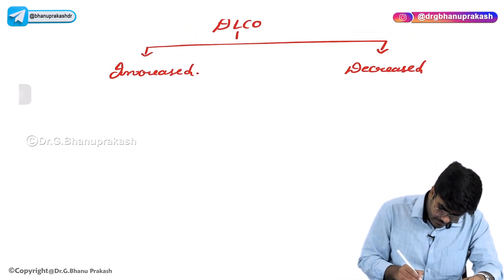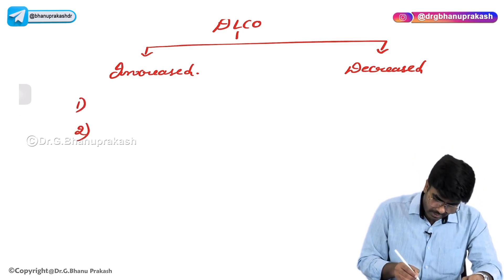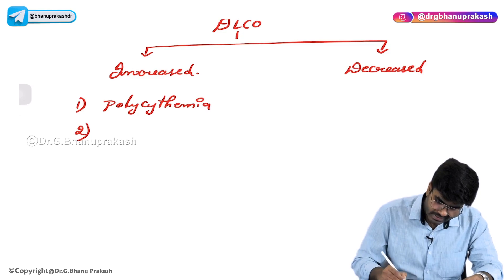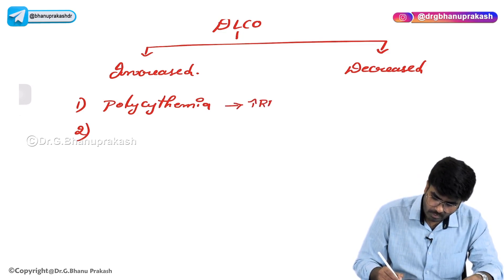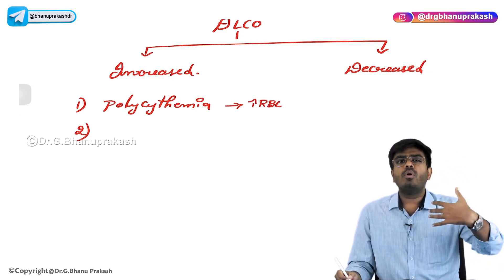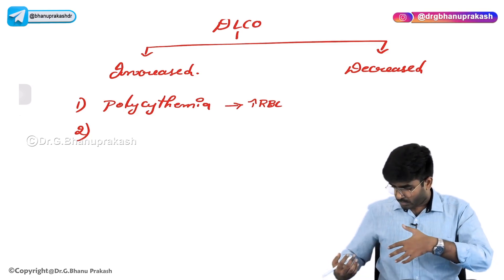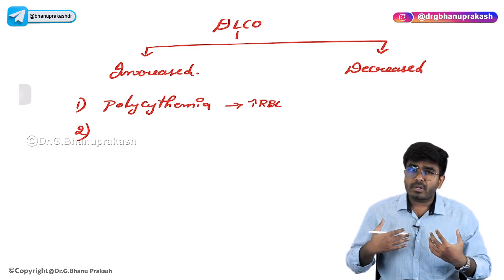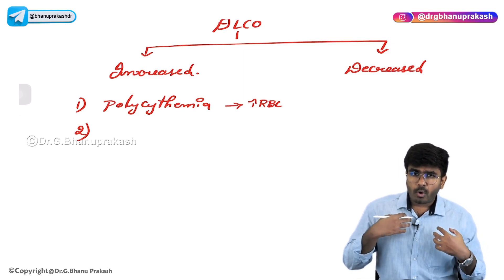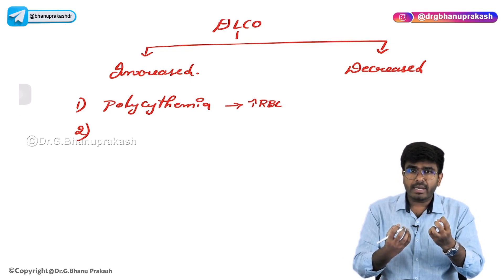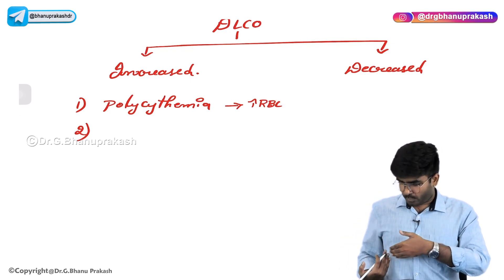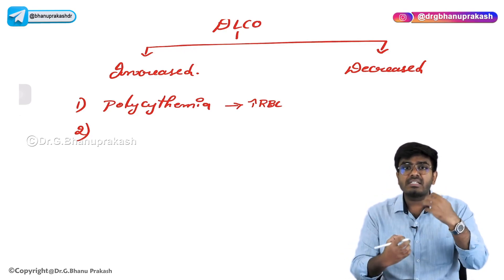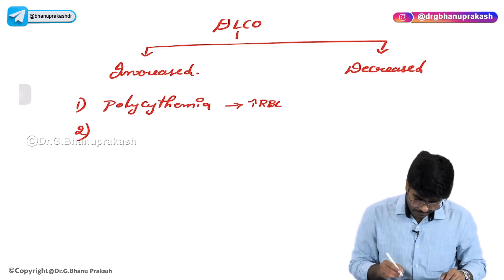Let's talk about conditions where DLCO is increased. First: polycythemia, a condition where there is an excessive amount of red blood cells in the blood. With more RBCs going to the lungs, there is more hemoglobin going to the lungs, which will easily pick up the carbon monoxide. More vehicles - imagining RBCs as vehicles - are going to the lungs, so they can easily pick up all the carbon monoxide. So carbon monoxide gets diffused into the blood very quickly in polycythemia.